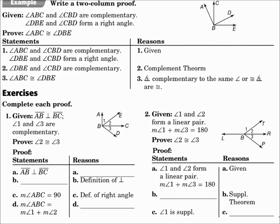Look at this example. Given that angle ABC and angle CBD are complementary, and angle DBE and angle CBD form a right angle, prove that angle ABC is congruent to angle DBE. You start the proof with what you're given, and the reason is given. Since angle DBE and angle CBD form a right angle, they're complementary because of the complement theorem. Finally, since angle ABC is complementary to angle CBD and angle DBE is complementary to that same angle, then angle ABC is congruent to angle DBE because angles complementary to the same angle are congruent.